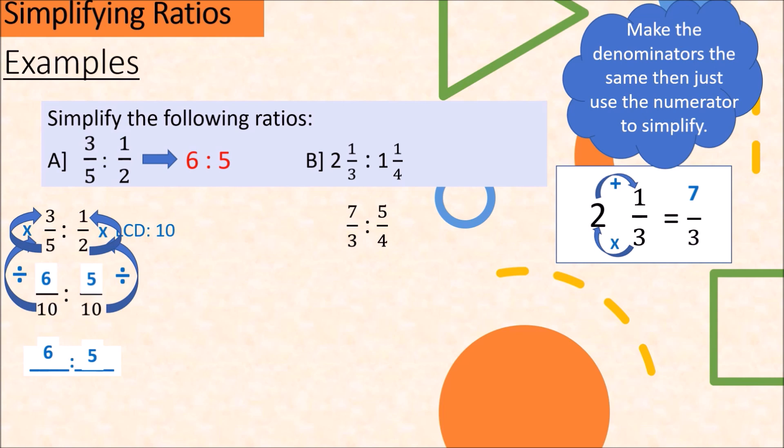Now make the denominators the same then use the numerators as your ratio. So we need an LCD. Least common factor of 3 and 4 is 12. Let's find the numerators. 12 divided by 3 is 4. 4 times 7 is 28. So 28 is the first numerator. For the second fraction, 12 divided by 4 is 3. 3 times 5 is 15. 15 is the other numerator. Now 7 over 3 is to 5 over 4 is the same as 28 over 12 is to 15 over 12. And this is equivalent to saying 28 is to 15, just using the numerators.